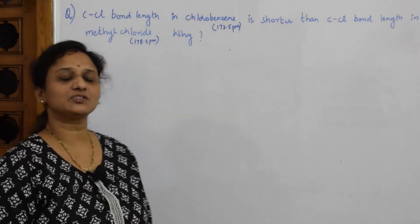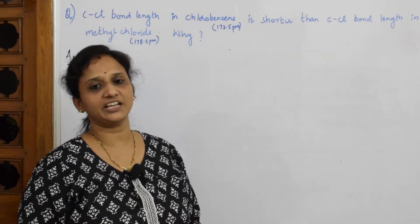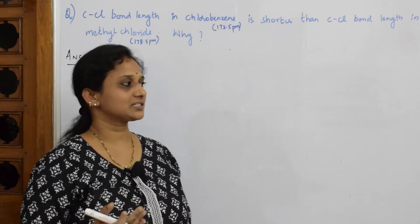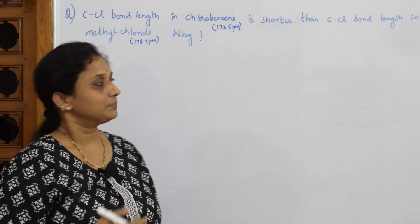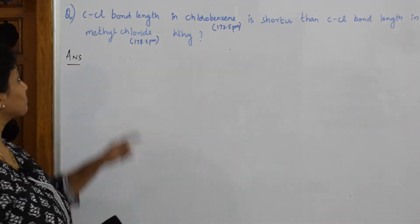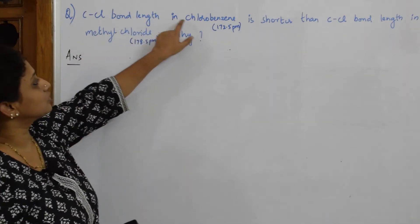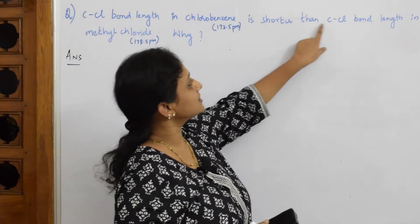So in the previous videos I've been discussing questions based on nature of haloalkanes. This is one more question related to that. Let us reason this: C-Cl bond length in chlorobenzene is shorter than C-Cl bond length in methyl chloride. Why?